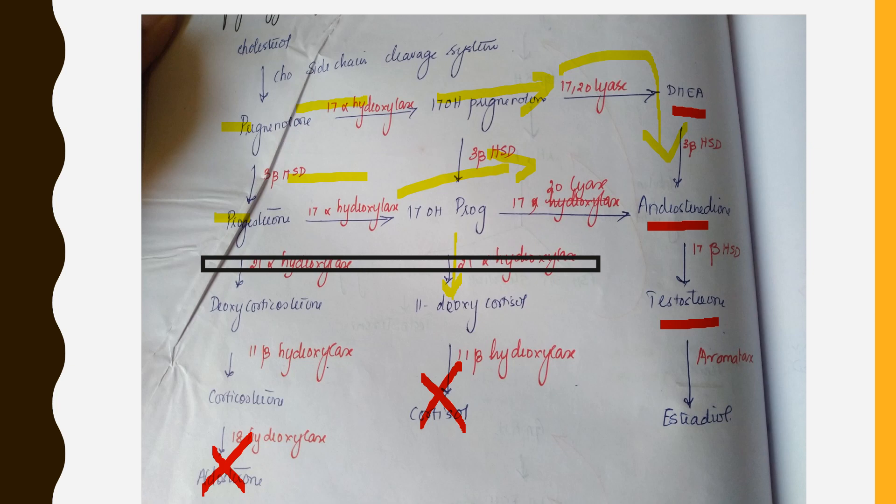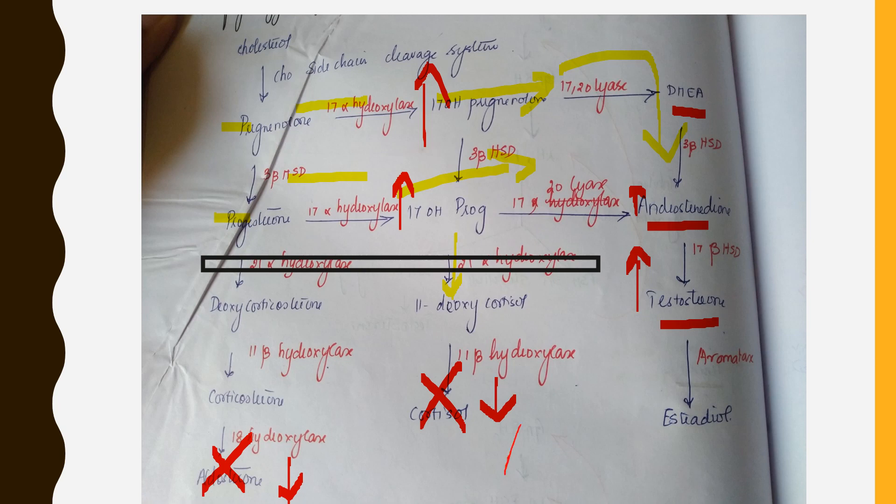A male child at birth may go undetected because the child has normal male external genitalia. A male child who goes undetected usually presents at around 10 to 14 days with clinical features of shock. For 21-alpha hydroxylase deficiency: increased 17-hydroxypregnenolone and 17-hydroxyprogesterone; nil aldosterone; no cortisol; increased testosterone and androstenedione. And due to low cortisol, ACTH will increase — these are the expected biochemical findings.